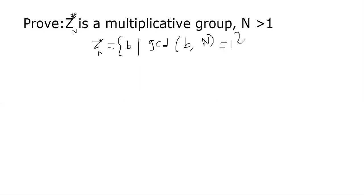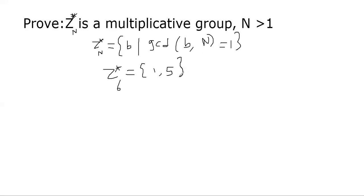Let me show you an example. For example, Z*6. You'll have number one. Two will not be there because GCD of two and six is two. Three will not be there because GCD is three. Four will not be there because GCD of four and six is two. Five will be there because GCD of five and six is one. So these are the only two elements. We consider all elements b where b is less than n.